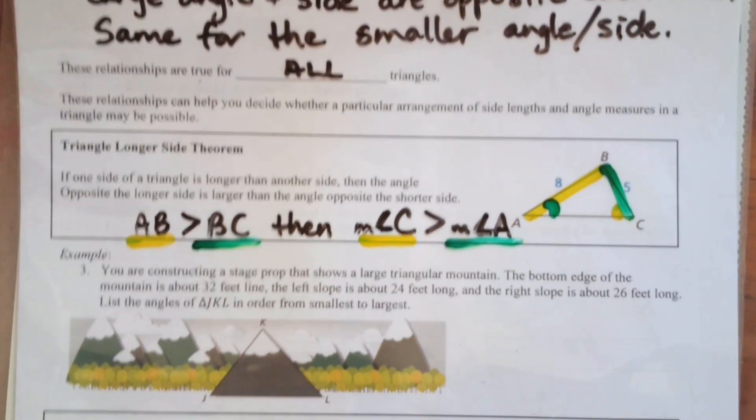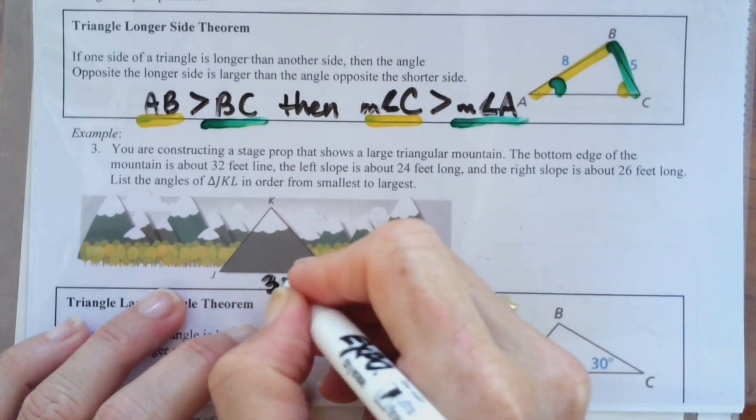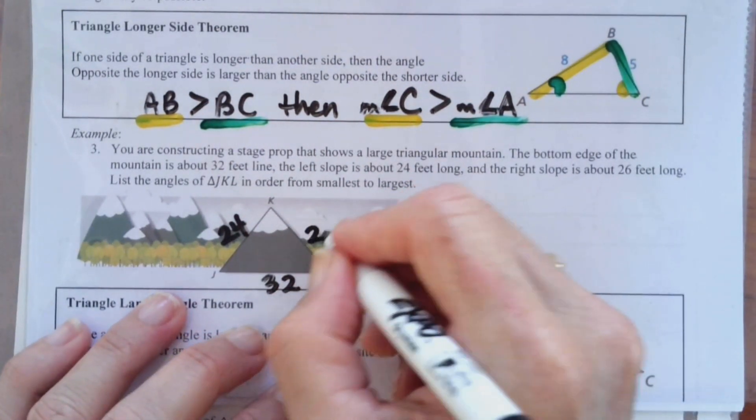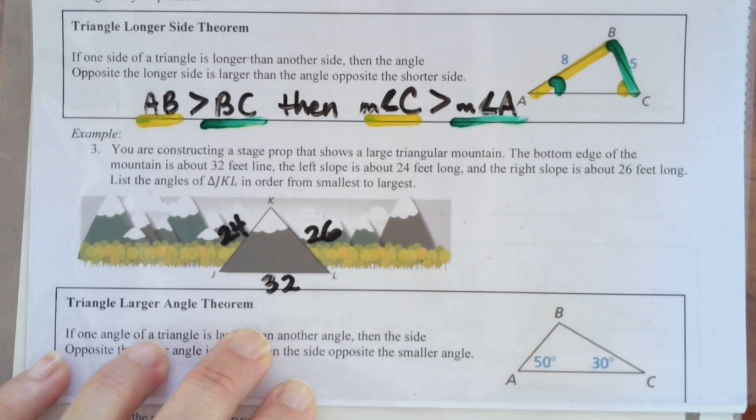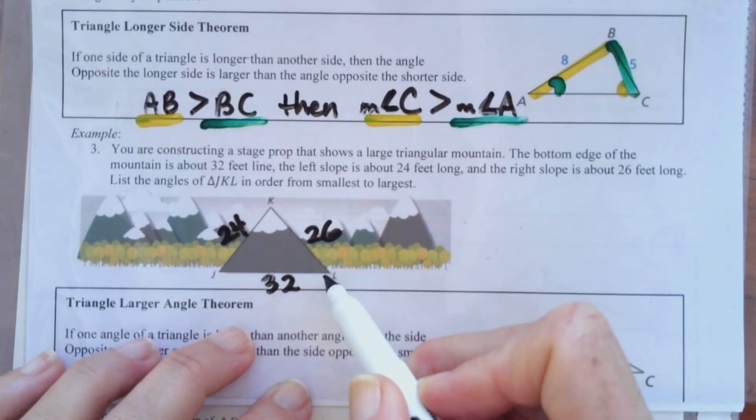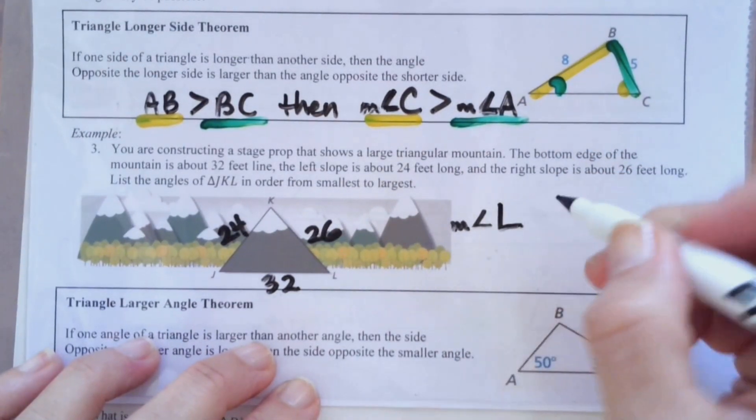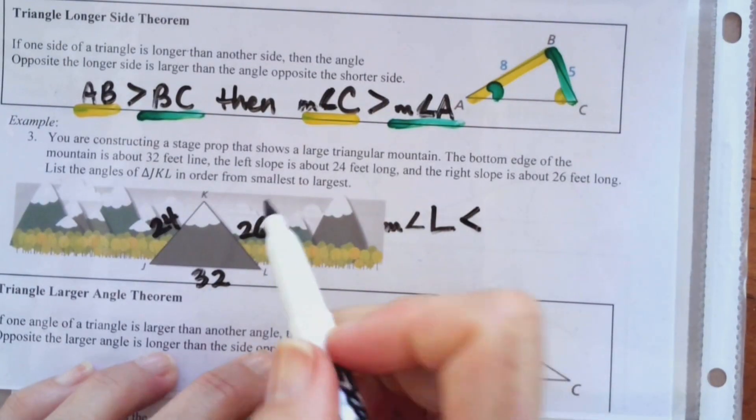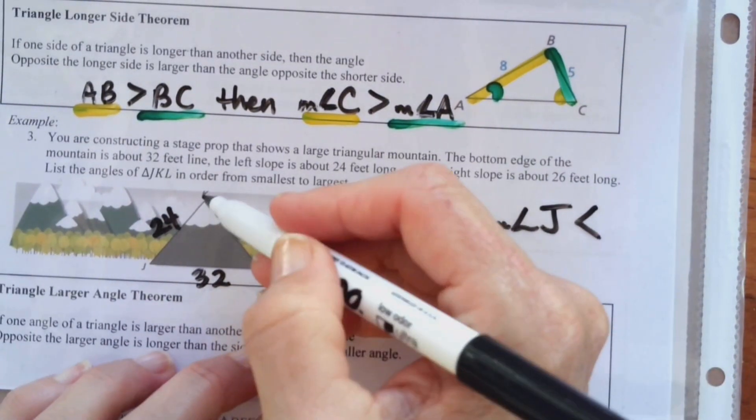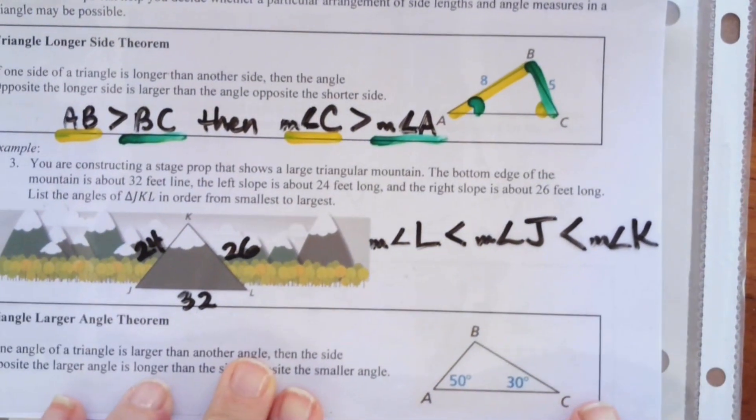So here's how you would do an example of that. You're constructing a stage prop that shows a large triangular mountain. The bottom edge of the mountain is 32 feet. The left slope is 24 feet. And the right slope is 26 feet. List the angles in order from smallest to largest. So you go from the smallest side and the angle L will be the smallest because it's. So the measure of angle L is less than. This will be the middle. So that'll be J. So the measure of angle J. And that's going to be less than the largest side is K. Measure of angle K. So be careful on those notes.